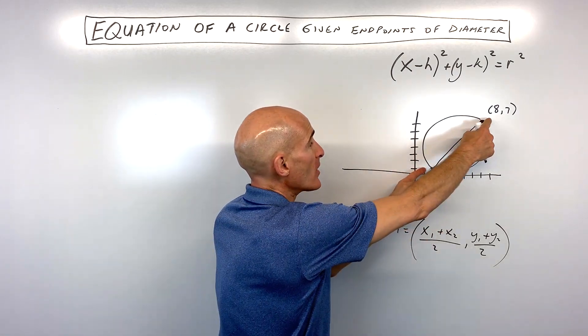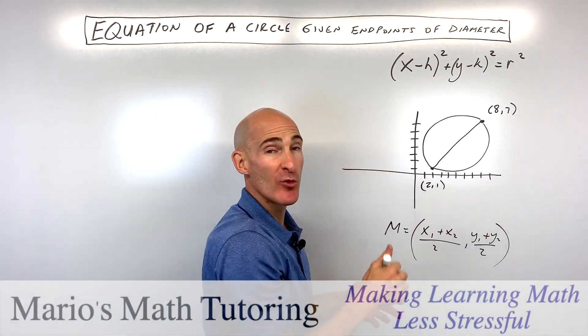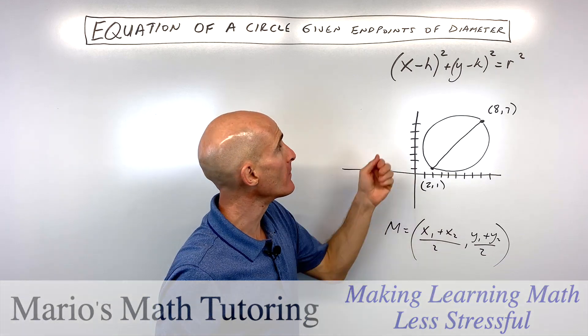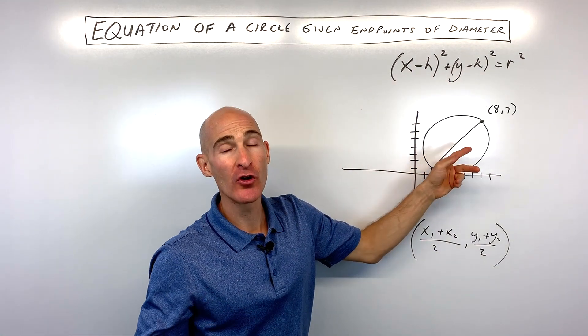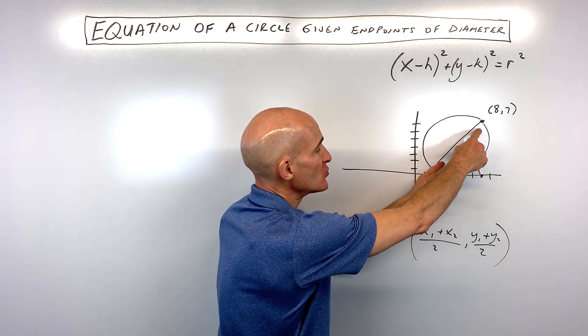So we're only given these two endpoints of the diameter of a circle, and we want to write the equation in standard form, which is this form right here. HK is the center of the circle, but how do we find the center just given these two endpoints?